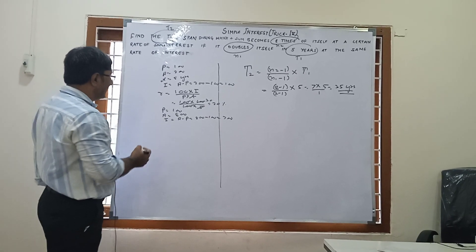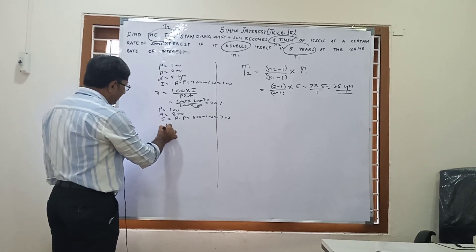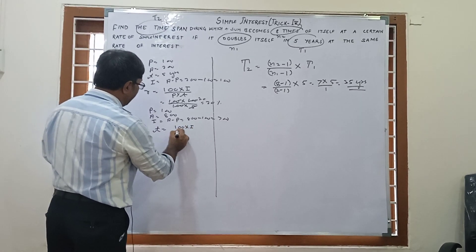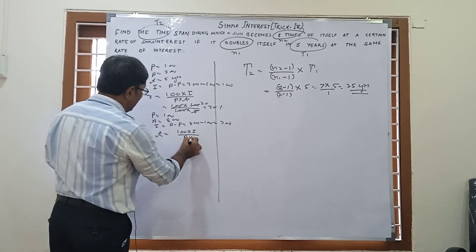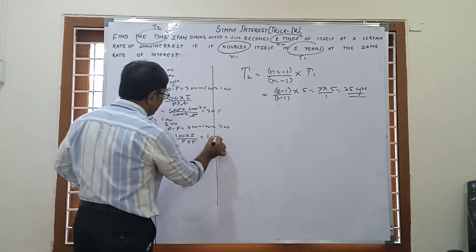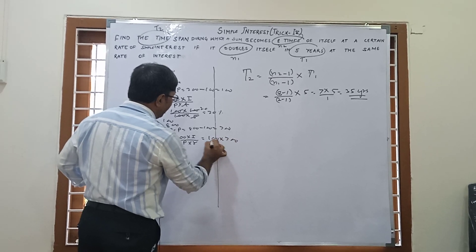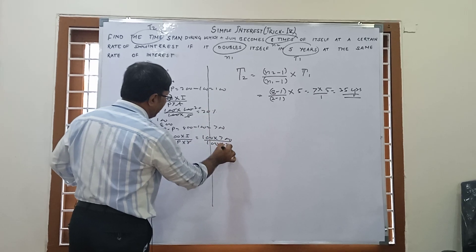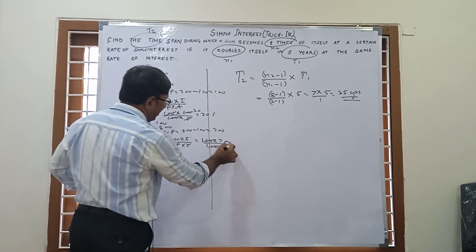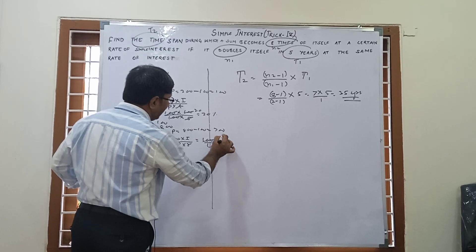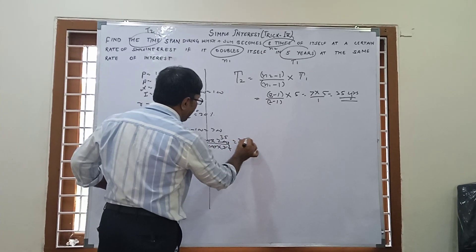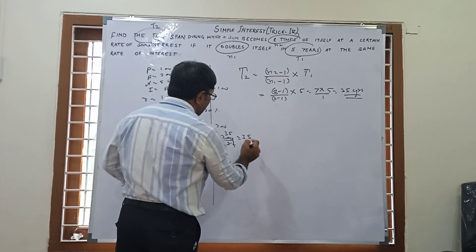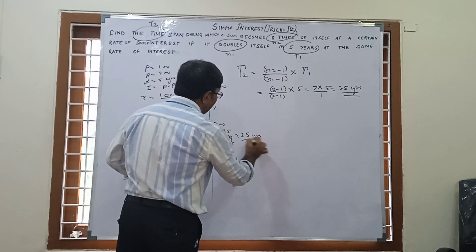We have to find time period. Time period T equals 100 times simple interest upon P times R. Here, 100 times simple interest 700 upon P is 100 and rate is 20. The 100 cancels out, the zero cancels out, and this is 35. Your answer is 35 years, that is the time period. So 35 years is the correct answer.